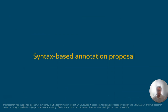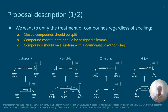What we propose is a syntax-based annotation scheme. We want to unify the treatment of compounds so that it doesn't matter how they're spelled. Closed compounds should be split, the constituents should be assigned a lemma — because when you split a compound on a morphological boundary you sometimes get elements that aren't actually words — and all compounds should be subtrees with a compound hyphen relation tag. This is determined by finding an associated syntactic phrase: for instance, pustiboha means devoid of god, and the associated compound means godless, so we split the compound into two and assign a compound relation followed by nmod.